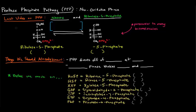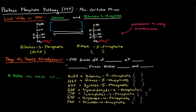Ribulose 5-phosphate, which I've drawn here — in the last video I referred to it as R5P, but in this video and henceforth I will refer to it as Ru5P. The reason is that ribulose 5-phosphate can be turned into this other molecule called ribose 5-phosphate. Ribulose sounds a lot like ribose, and ribulose can be turned into ribose 5-phosphate. Ribose 5-phosphate I will now refer to as R5P henceforth.